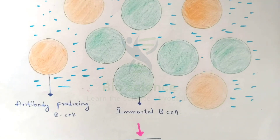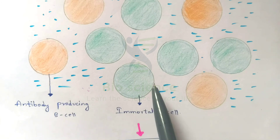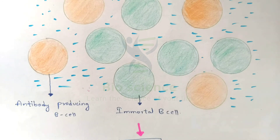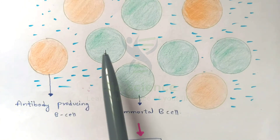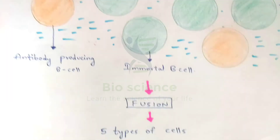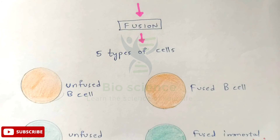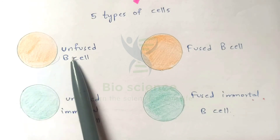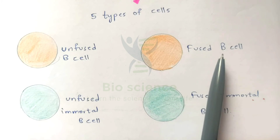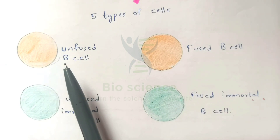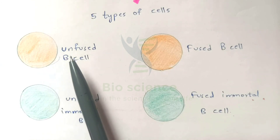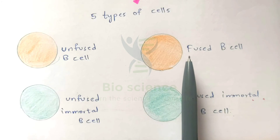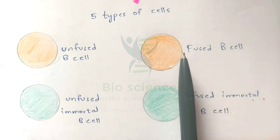We take the two cells — antibody-producing B cells and immortal B cells — as a mixture in PEG. Once exposed to Polyethylene Glycol, they undergo the process of fusion. After fusion is complete, we obtain five types of cells: unfused B cell, fused B cell, unfused immortal B cell, fused immortal B cell, and the hybrid cell.